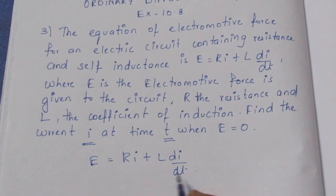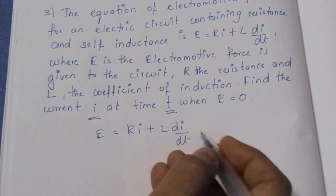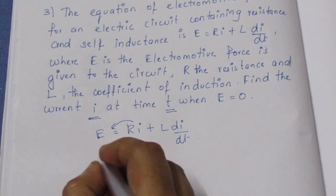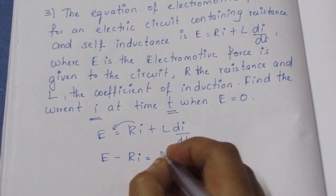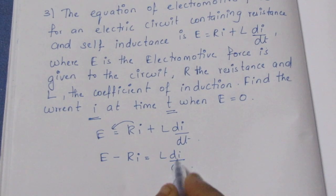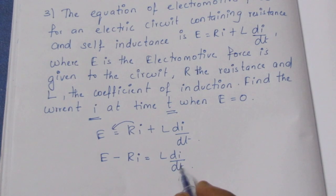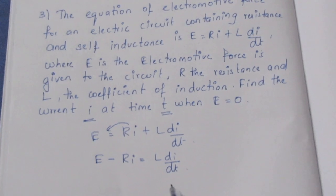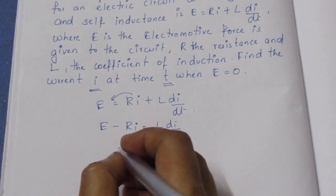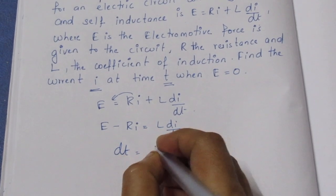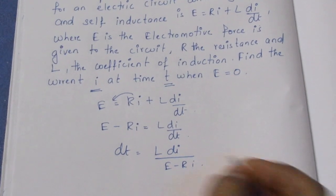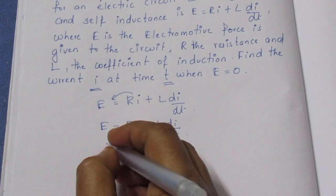It is variable separable. So dt is equal to L di by E minus Ri. Now we need to do integration on both sides.